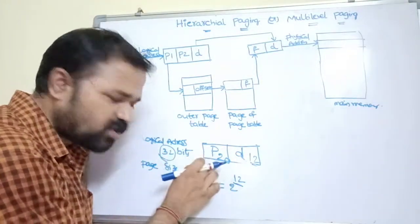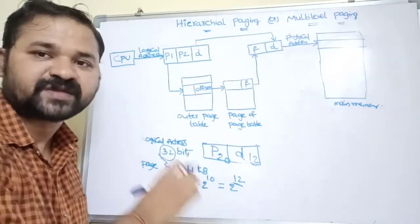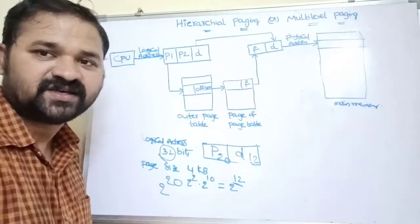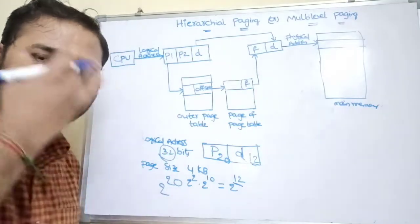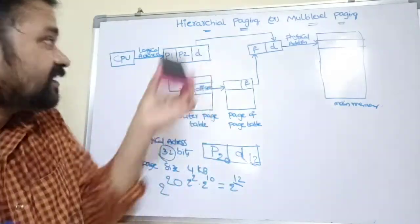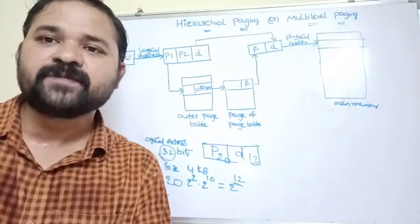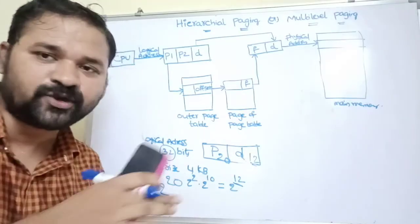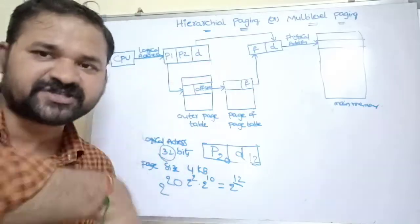Since the page number is 20 bits, we can store 2^20 (more than 10 lakh) page numbers in the page table. Storing 10 lakh entries in a single page table means we need to keep the entire page table in main memory, which requires a large amount of access time.